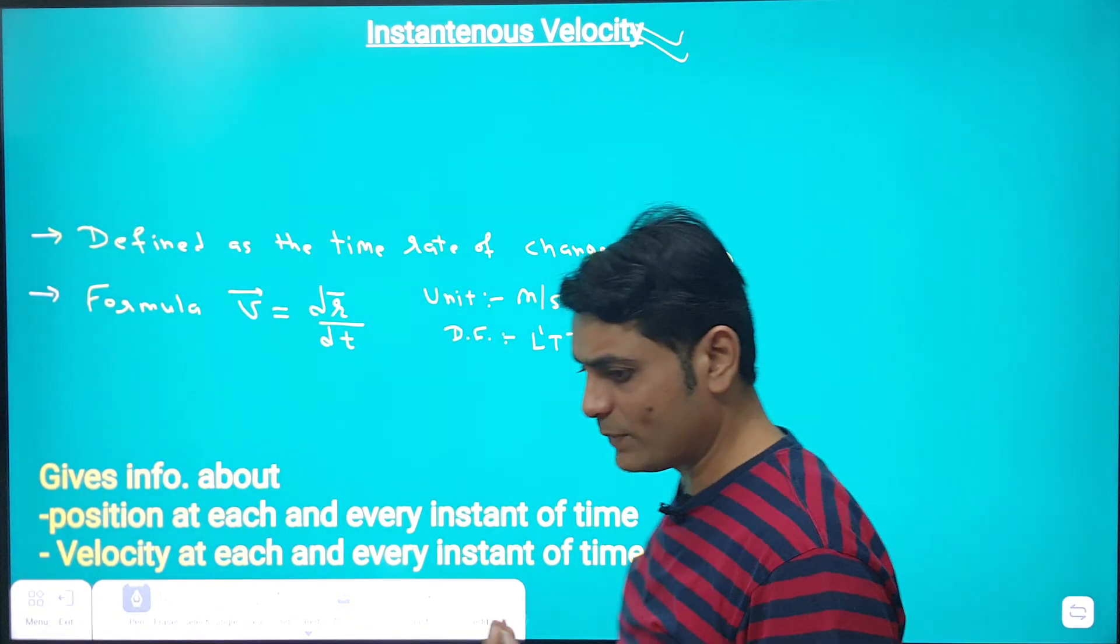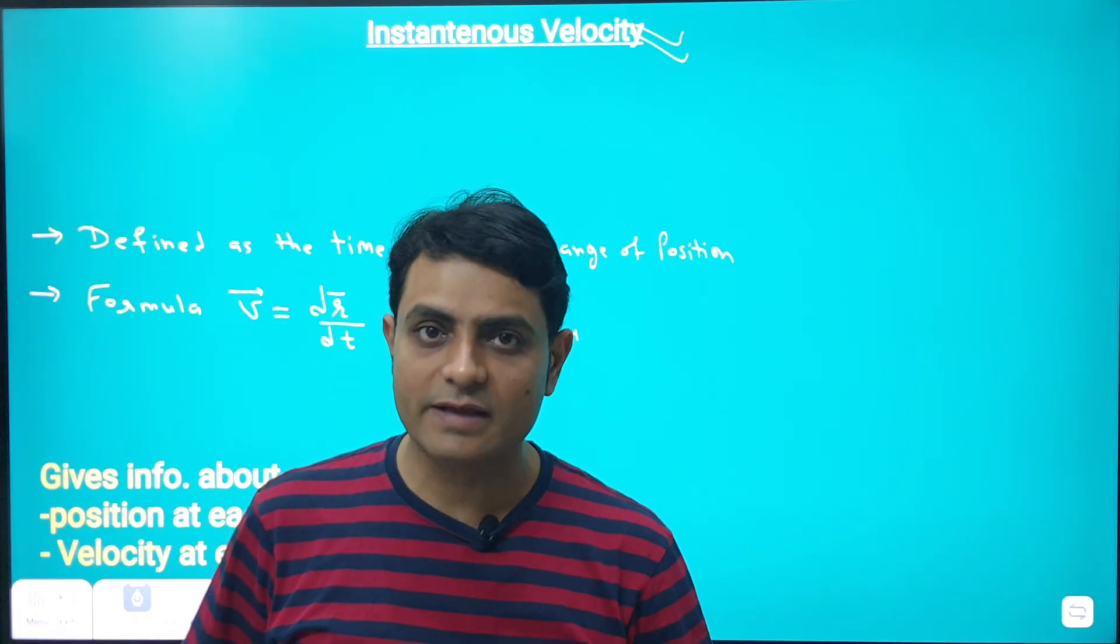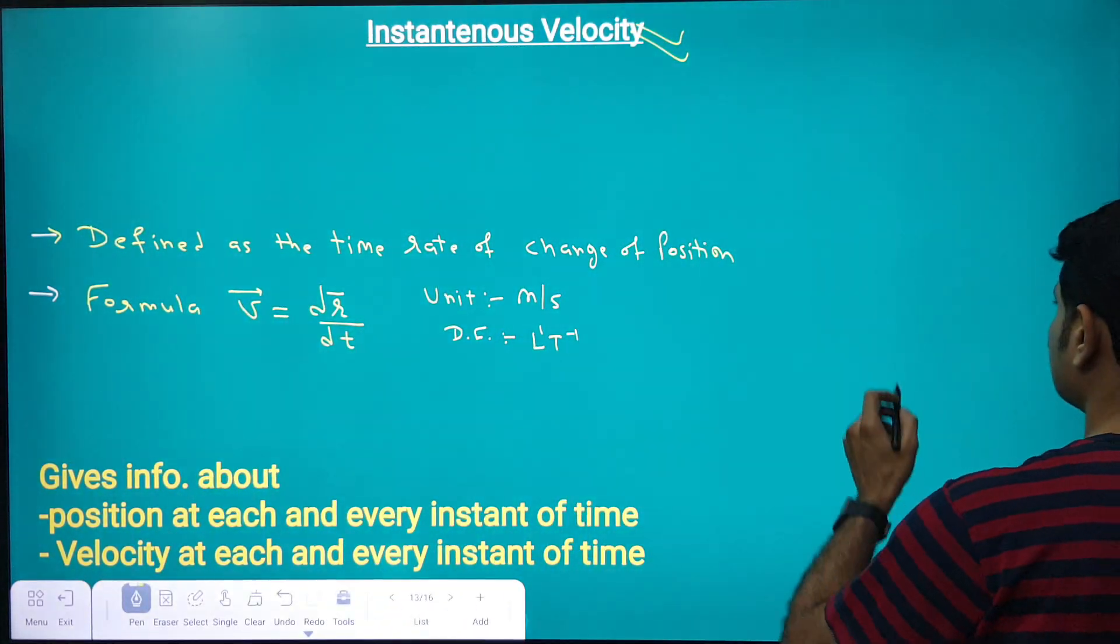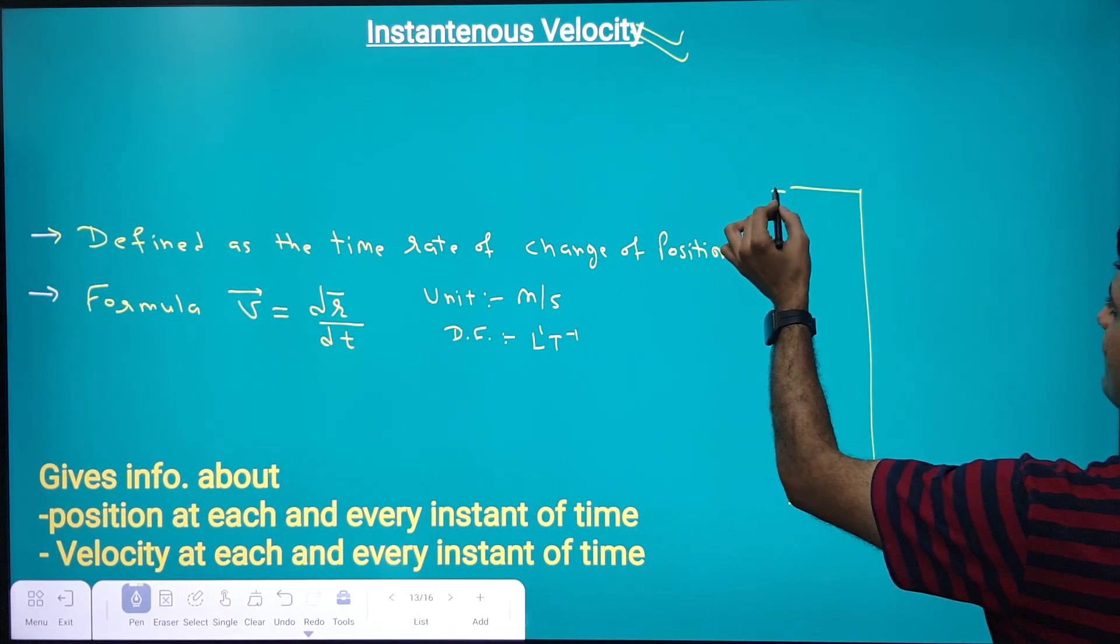This is a magical velocity with the help of which we can find out position and velocity at each and every instant of time. I'm giving you an example. Imagine a stone is thrown from a building having height h.